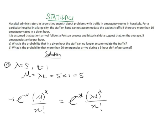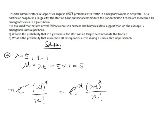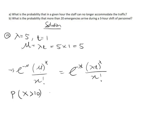We are asked for the probability that the staff can no longer accommodate the traffic. From the question, the staff cannot accommodate if there are more than 10 emergency cases. So we need P(X > 10). Since we don't know the maximum number but know it's more than 10, we use the complement: P(X > 10) = 1 minus P(X ≤ 10).